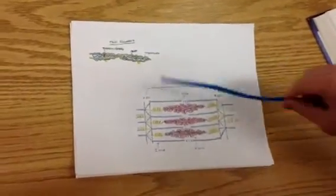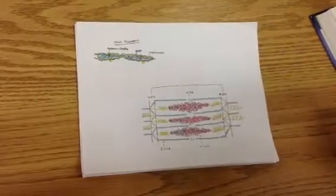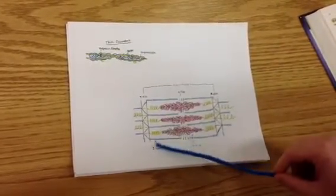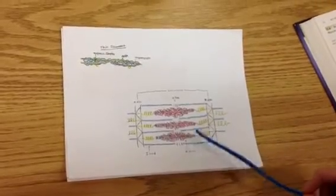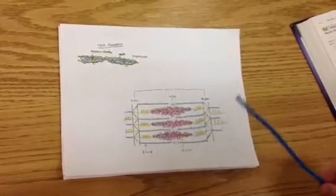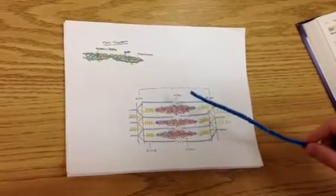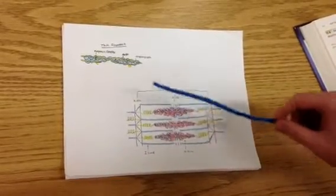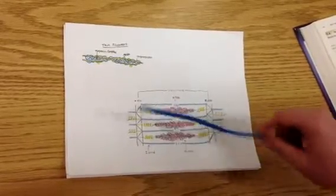Here we have a sarcomere, which extends from Z-disc to Z-disc, and is the basic unit of muscle. We have the light I-band, which is made up of thin filaments. We have the H-band, which is made up of thick filaments. And we also have the Z-disc, which is a fine, dense line forming sarcomere boundaries in striated muscles.